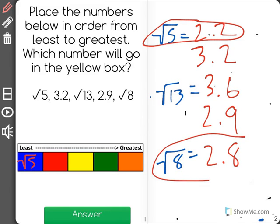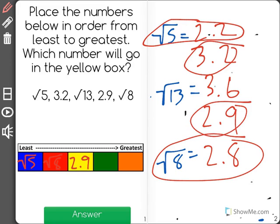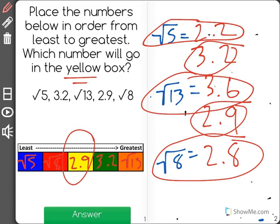The next least is 2.8, which for us was root 8. Then 2.9, followed by 3.2, and last 3.6 or root 13. So which number will go in the yellow box? The answer 2.9.